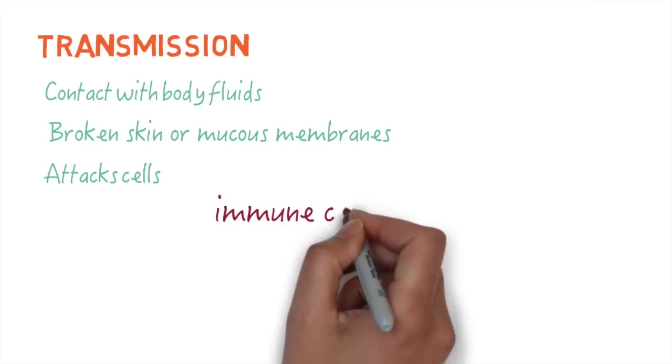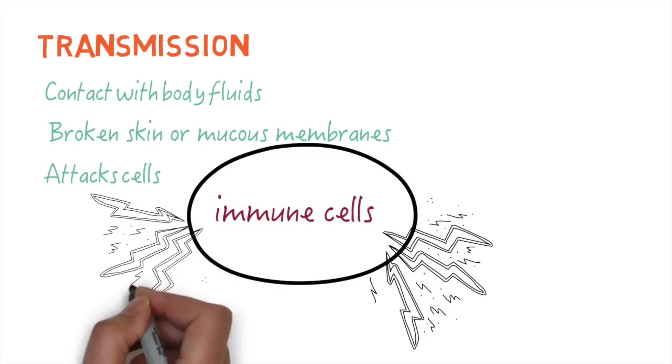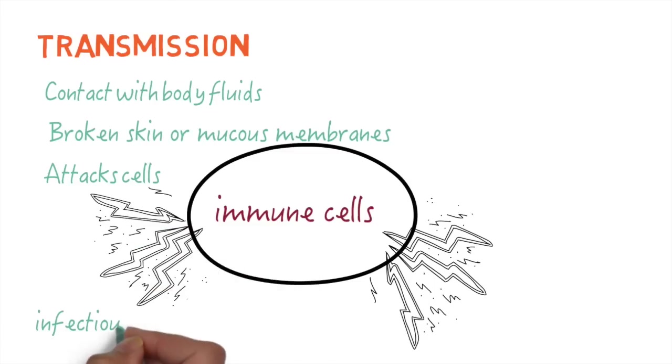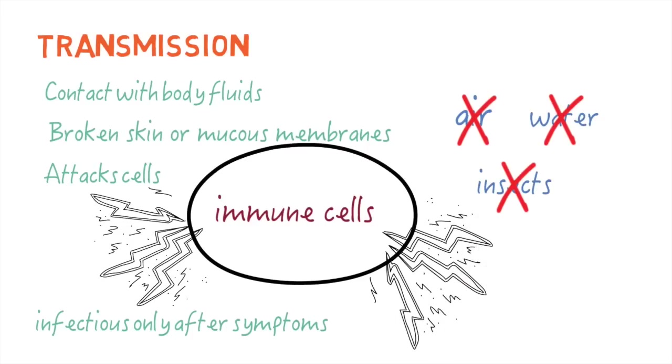It also attacks immune cells that are meant to protect the body from infections and creates havoc on the body's immune response. People with Ebola are only infectious when they start showing symptoms. The Ebola virus cannot spread through air or water, and there is no evidence that it can spread through insects.